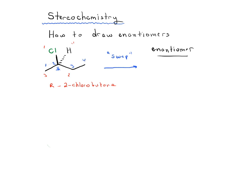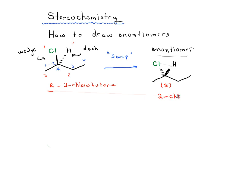Here is our stereocenter on carbon number two. We're going to invert any two groups — the most convenient would be chlorine and hydrogen. Chlorine is a wedge coming out of the page, H is a dash going back into the page. We just invert their positions so hydrogen points out of the page and chlorine goes back. If you figure out R and S here, you'll know this is the S stereocenter — that is the enantiomer. One is R and this is S2-chlorobutane, making them enantiomers.